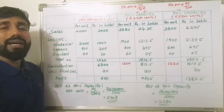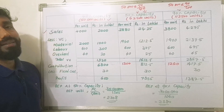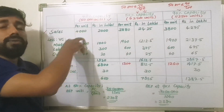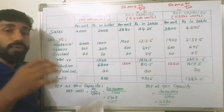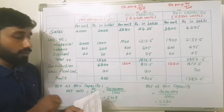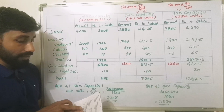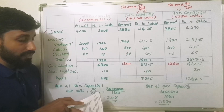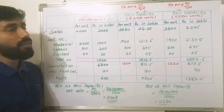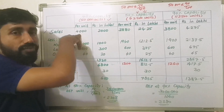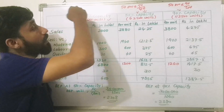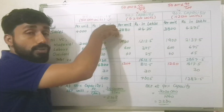We will now convert the marginal cost statement. Sales per unit at 40% capacity is Rs. 4,000, as each refrigerator sells for Rs. 4,000.